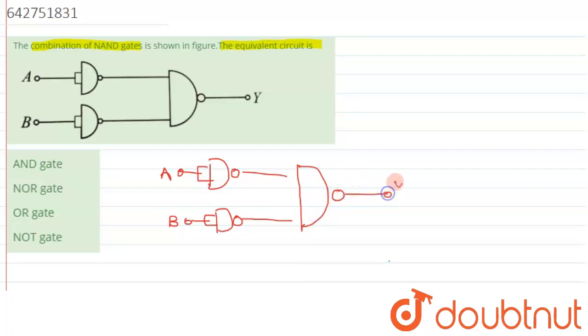We are supposed to find the output Y. Let's first visualize. We'll be using De Morgan's principle over here, so that would be quite easier. Another method we can go for is truth table, but let's solve it with De Morgan's principle.